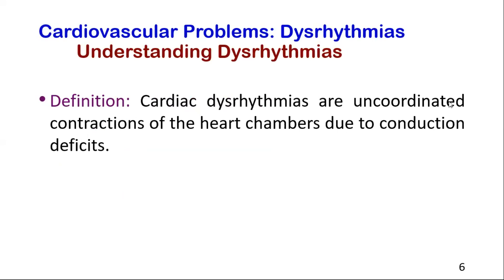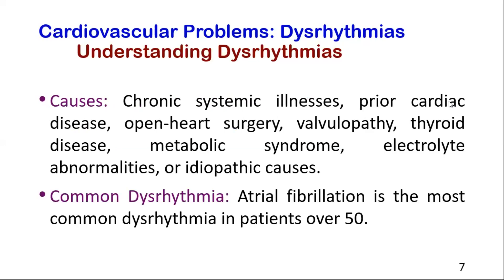Cardiac dysrhythmias, or irregular heartbeats, happen due to problems with the heart's electrical system, characterized by uncoordinated heart contractions due to conduction issues. These irregular heartbeats can be caused by chronic illnesses, previous heart conditions, surgeries, thyroid issues, or other factors, with atrial fibrillation being common in people over 50.